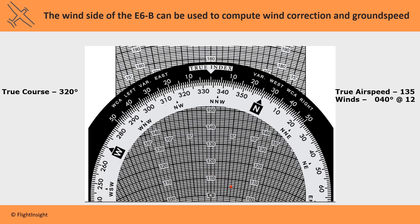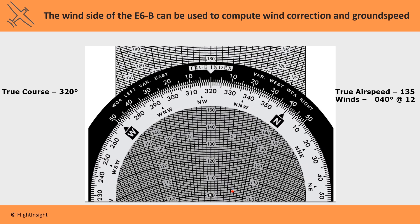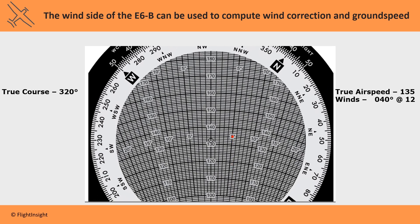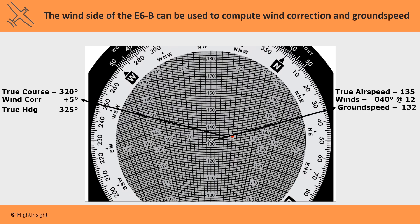Next, spin the wheel so that the true course of 320 is under the true index. We'll then slide the wheel up so that the red mark we made for wind speed lies on the airspeed mark of 135 knots. We can read the wind correction from how far to the right the mark is from the centerline. That mark is 5 degrees right, meaning we'll need a 5 degree wind correction to the right. If we add that to the true course, we get the true heading of 325 degrees. We can also read the ground speed from the center hole, about 132 knots.